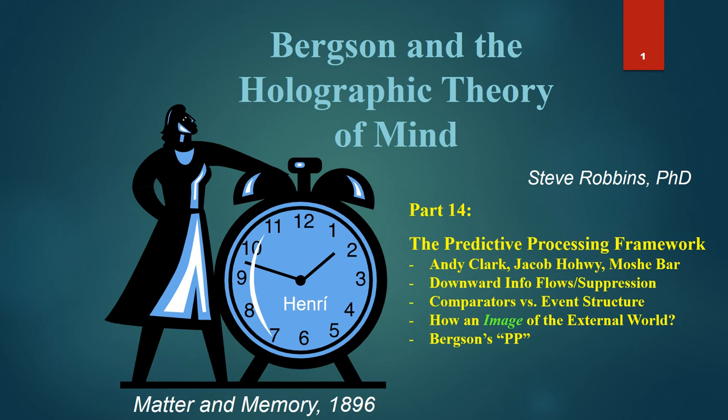We'll be looking at a few of the major theorists like Andy Clark, Jacob Howey, Moshi Bar, the whole notion of downward information flows in the brain and suppression of upward input from the external world, the comparator notion versus the actual structure of events, the difficulty of explaining the image of the external world in this framework, and Bergson's own version of Predictive Processing based in his entirely different reconstructive wave or brain as a reconstructive wave passed into the holographic field model.